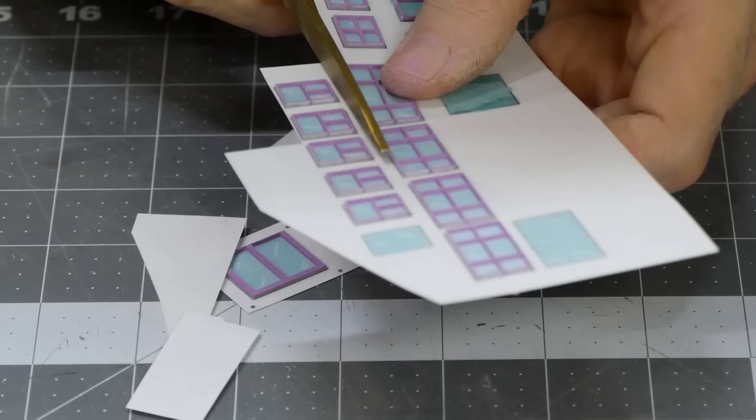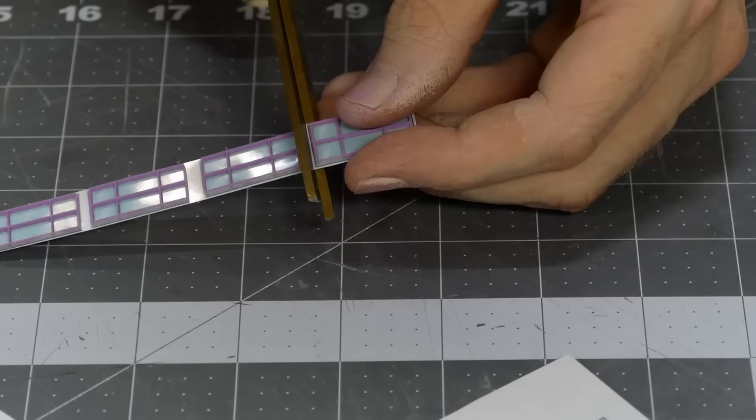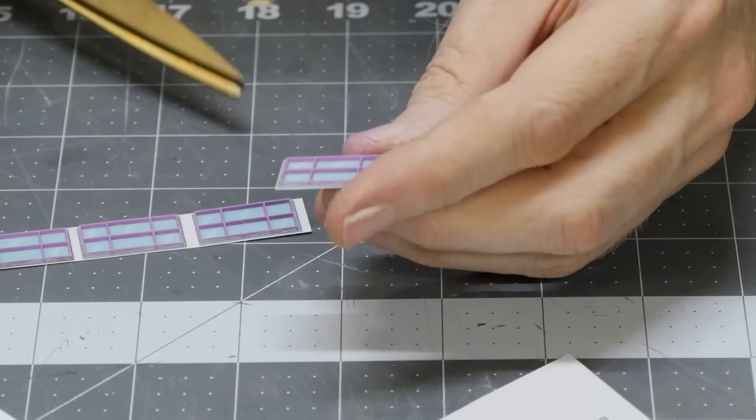Next it's just a matter of cutting them out. I deliberately cut them out with a small amount of overhang protruding past the window frame. This will help when gluing them in place.